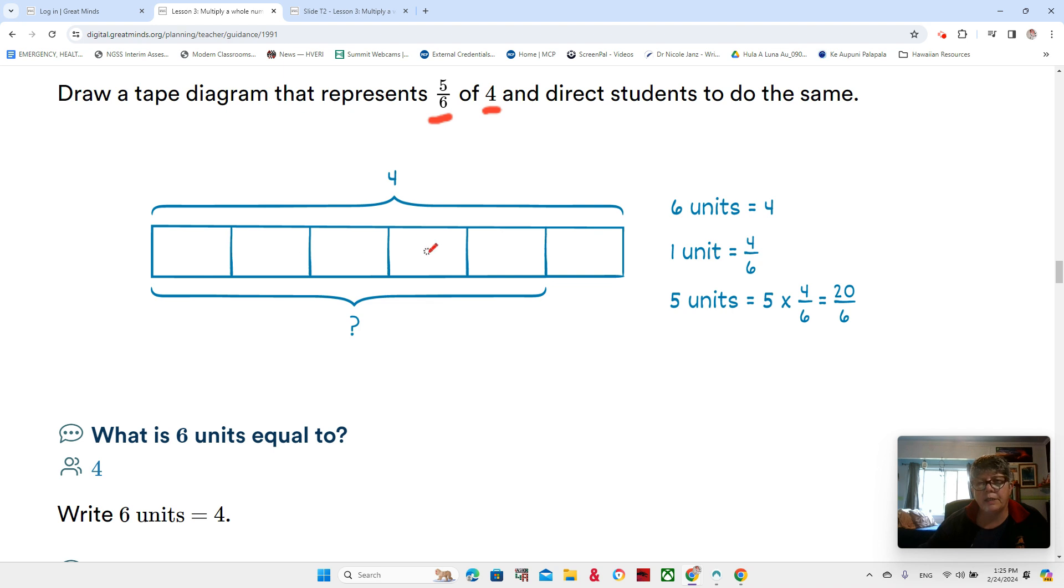I'm going to give you five-sixths, so that means I need to make six units: one, two, three, four, five, six. Now one unit is going to be four-sixths because four divided by six is one of them. But I need five of them: one, two, three, four, five.